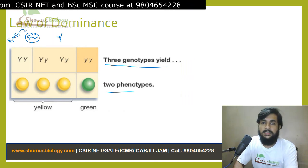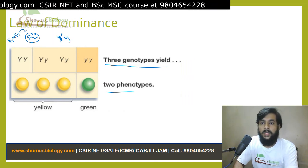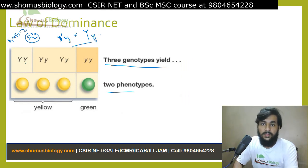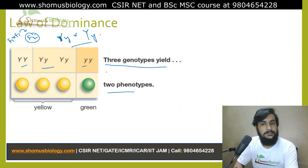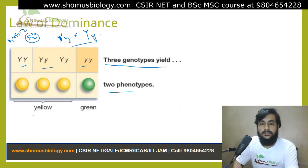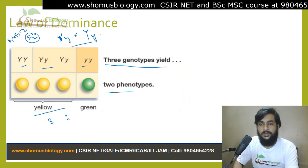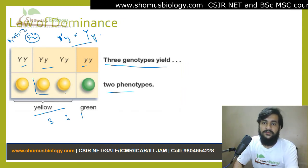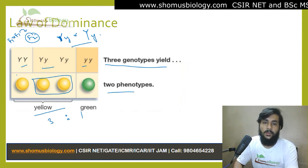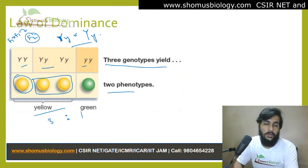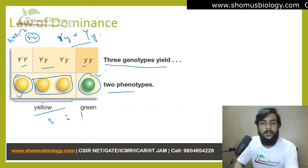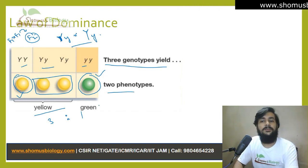For example, if we consider capital Y cross with small y, we get a 3:1 ratio — yellow to green. Two of them will be genotypically hybrid and one will be homozygous dominant with a pure trait, and one will be homozygous recessive and they will be green.